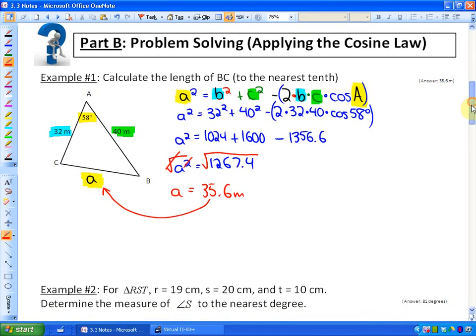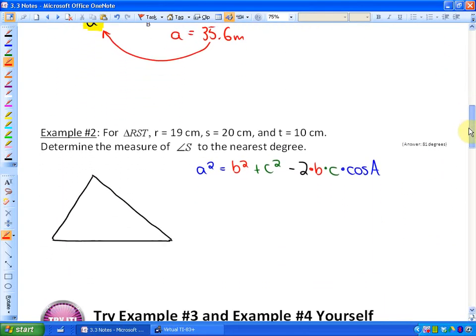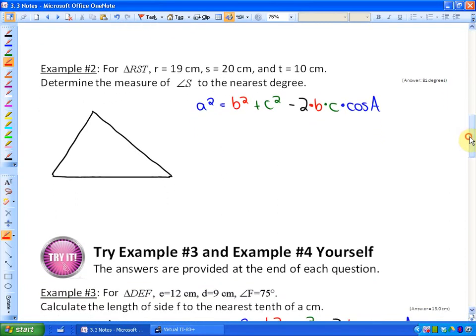So the last problem that we'll do in this lesson is solving for an angle using the cosine law, which is a little bit more tricky because we're going to have to simplify as well as solve algebraically. This particular question in your study guide, you aren't given a triangle here, I've drawn it for you. It says, for triangle RST, side r is equivalent to 19 cm, side s is equivalent to 20 cm, and side t is equivalent to 10 cm.